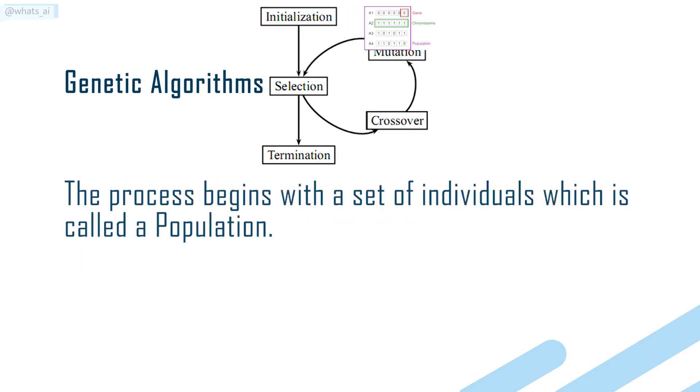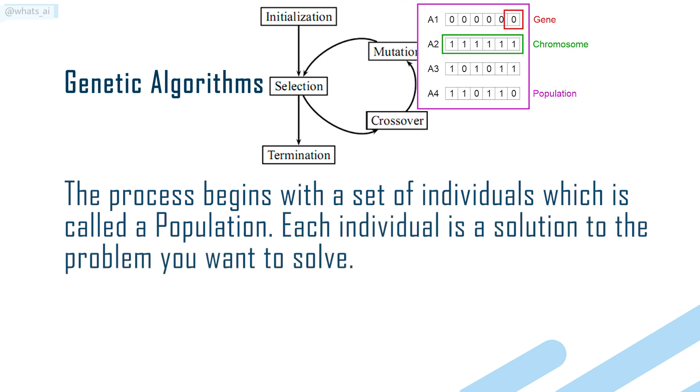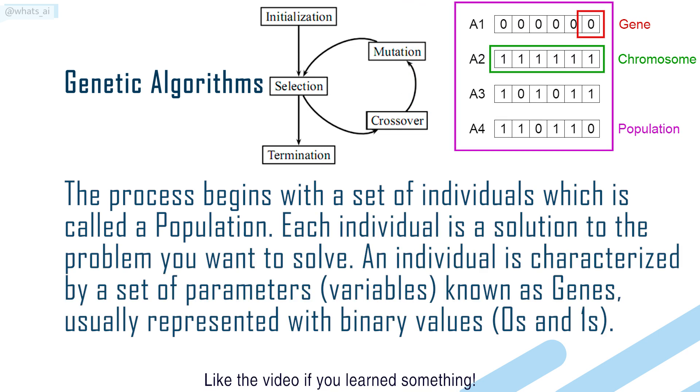The process begins with a set of individuals which is called a population. Each individual is a solution to the problem you want to solve. An individual is characterized by a set of parameters or variables known as genes.